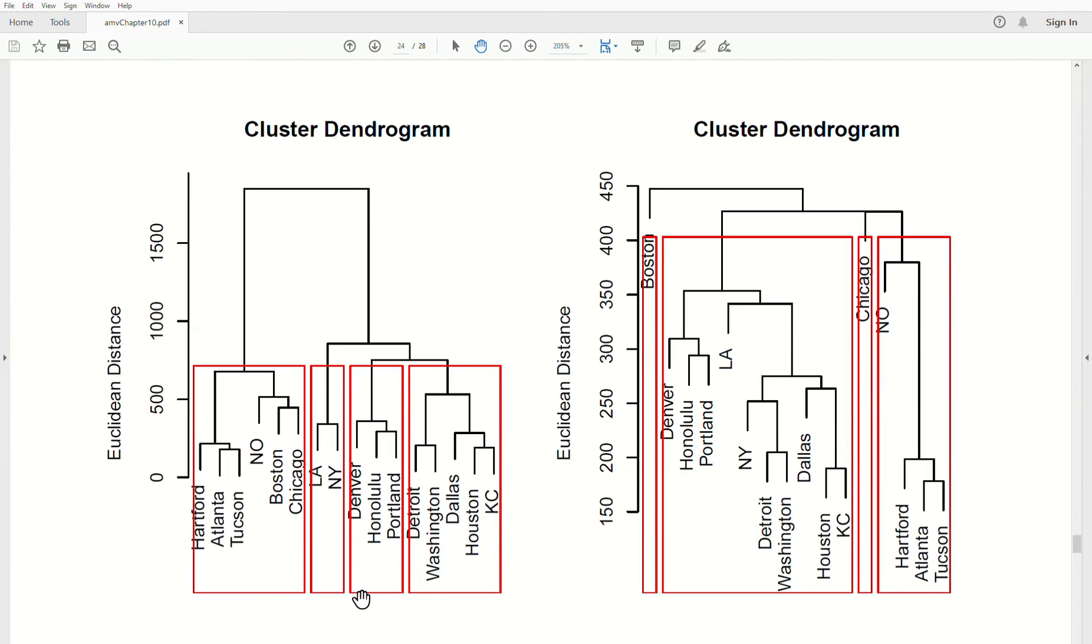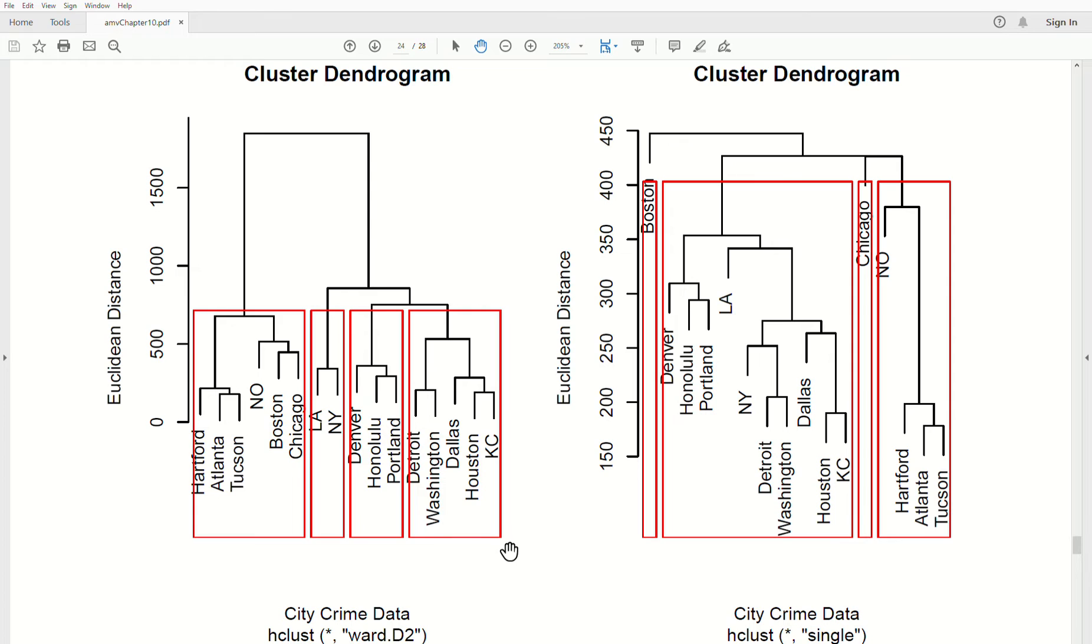I can only fit two on a screen at a time. And so these are the clusterings between the single linkage and the Ward method. And notice that the clusters are quite different.